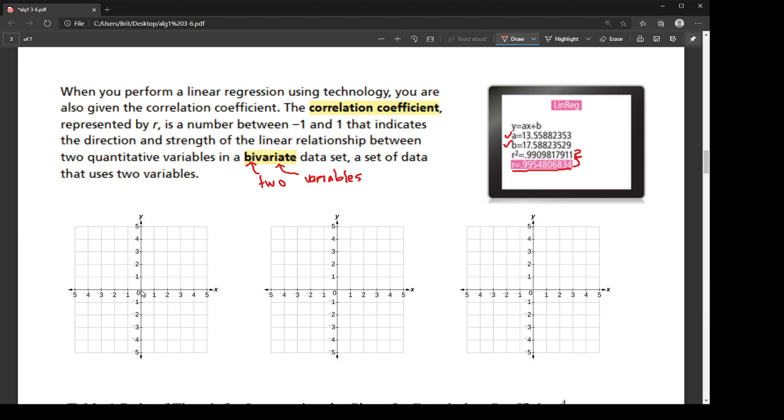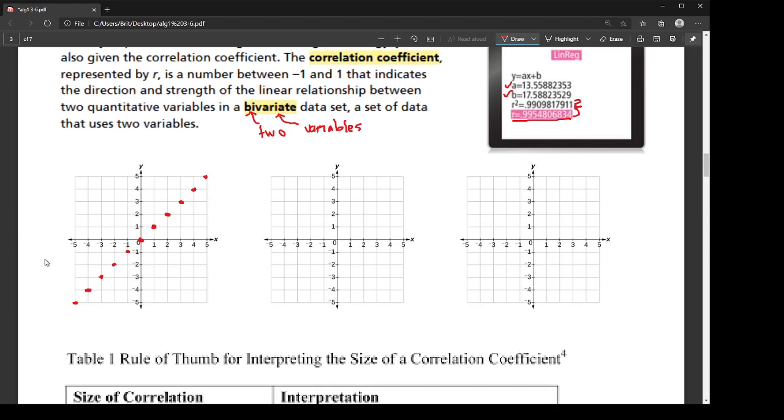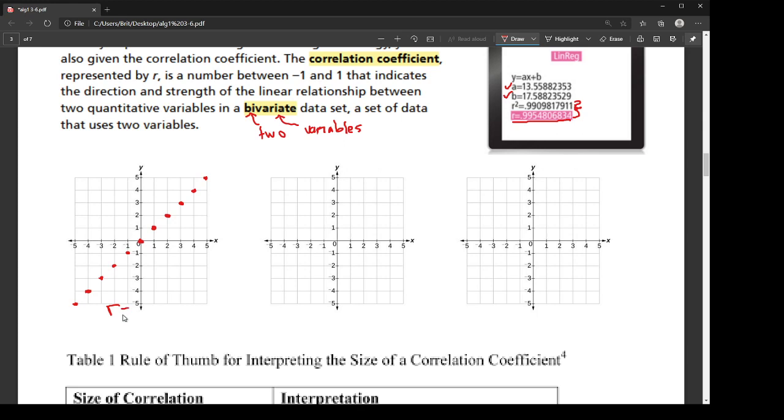So we have three kinds of situations, right? We have a perfectly linear positive data set like this. Alright, so this is bivariate, right? Because it's x and y axis. The correlation coefficient for this is one. Alright, that is the largest number that we can have. And it represents a perfect positive correlation. And it's positive because the slope of this line is a positive slope. It's going uphill.